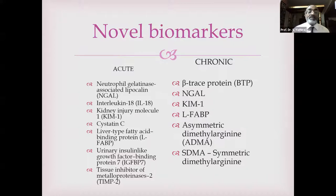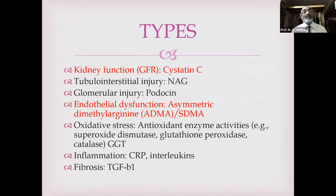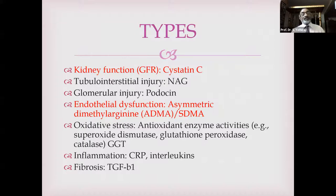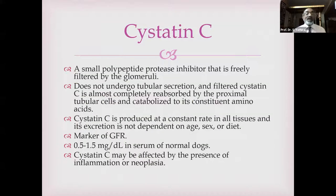Urine protein-to-creatinine ratio: less than 0.2 is non-proteinuric, 0.2 to 0.5 is borderline, more than 0.5 is proteinuric. Blood pressure monitoring: less than 150 mmHg — normotensive; 150–159 — borderline hypertensive; 160–179 — hypertensive; more than 180 — severely hypertensive. Dogs and cats with borderline serum creatinine or SDMA should be retested two weeks after initial testing, then monitored every three months to assess renal function.